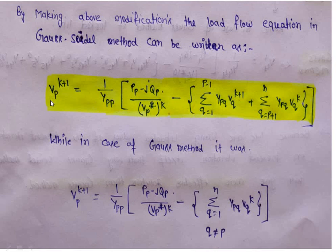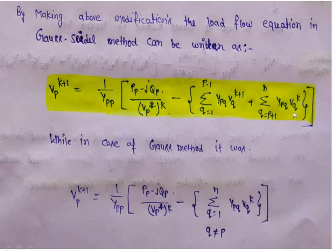If we are calculating the voltage at the pth bus, the values of bus 1 to p minus 1 should be used as updated values because we have already calculated these in this particular iteration. While bus p plus 1 to n voltages have not been calculated in this iteration, so these values should be used from the previous iteration. If we are at the first iteration, then these values will be the initial values.